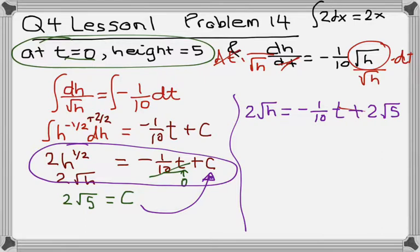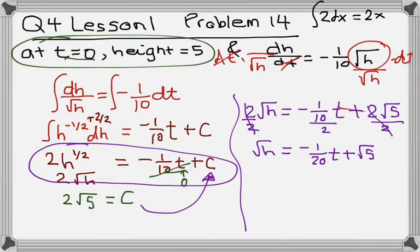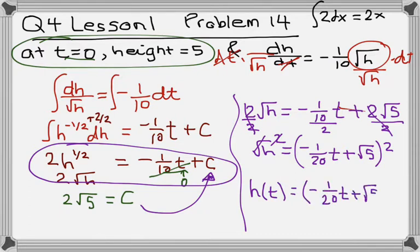So from here, to solve for h, we can divide by 2. Everything is divided by 2. So root h equals, now negative 1 tenth divided by 2 is just negative 1 twentieth t, and then that is just plus root 5. And then the very last step to find t is to square both sides. So the square cancels out the square root. So h of t equals negative 1 over 20t plus root 5 squared, and that's it for h of t.